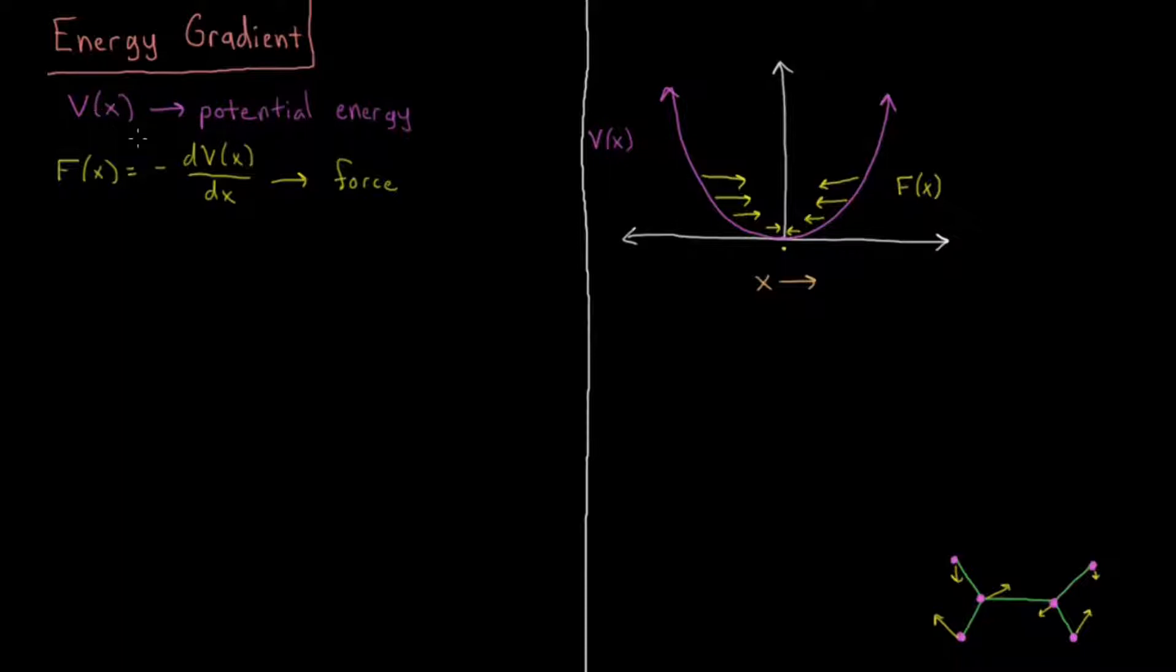If our only variable in the system is x, then it's V of x. So if we want to know, if our atom feels this potential energy, what's the force that the atom feels due to that potential?